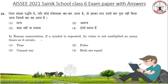In Roman numeration, if a symbol is repeated, its value is not multiplied as many times as it occurs. Options: true or false, cannot say, or both are equal. If you know the answer, please put the comment below. Answer is False.